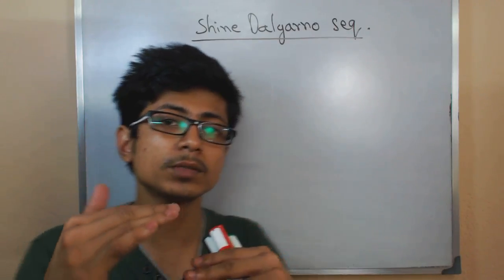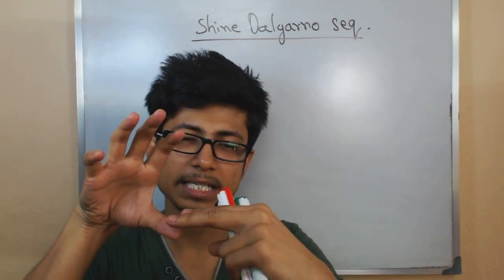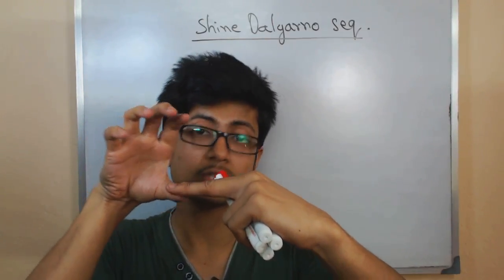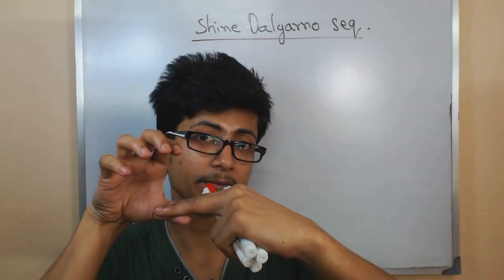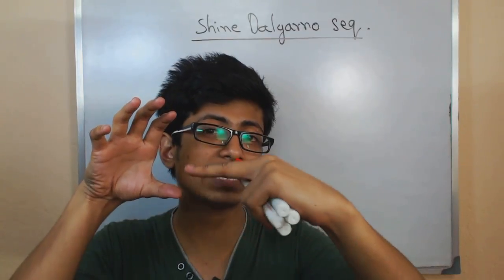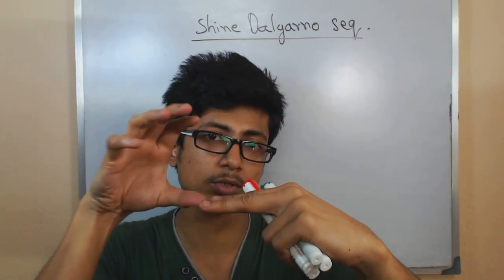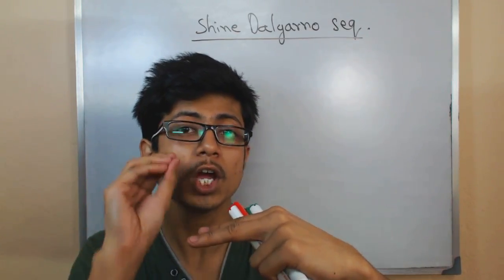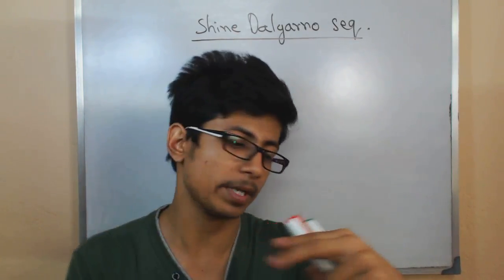And ribosomes should recognize the initiation sequence that is present in mRNA to start the initiation of translation. And for the recognition of this initiation site for the ribosome, it requires the presence of a consensus conserved sequence called Shine-Dalgarno sequence.